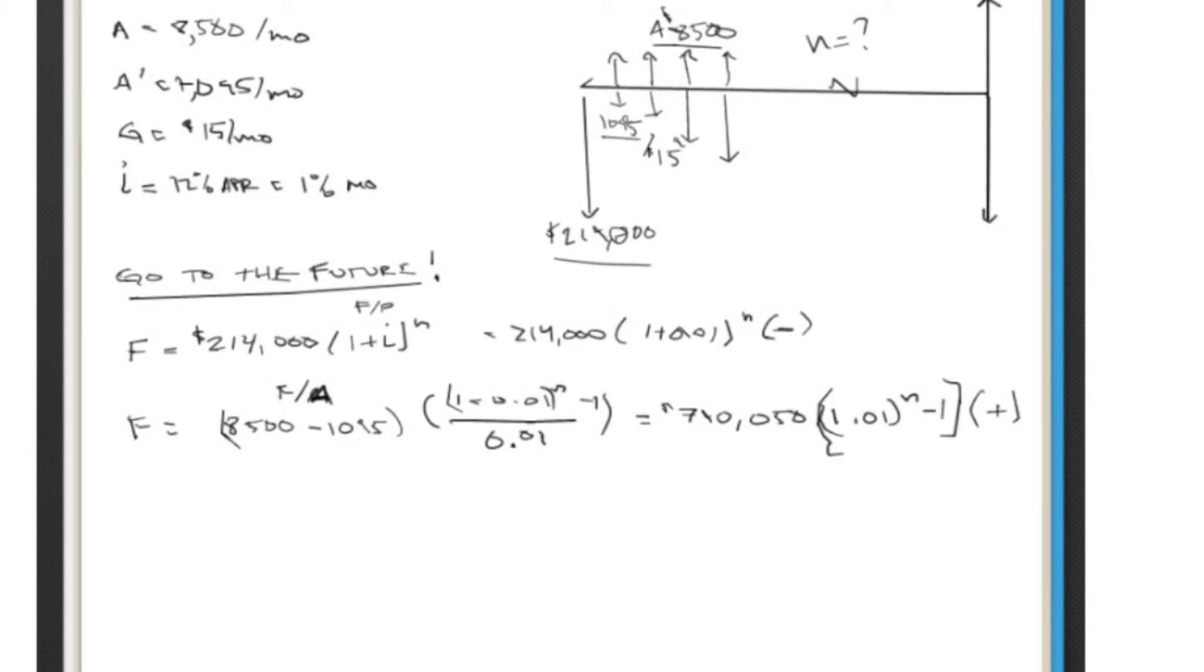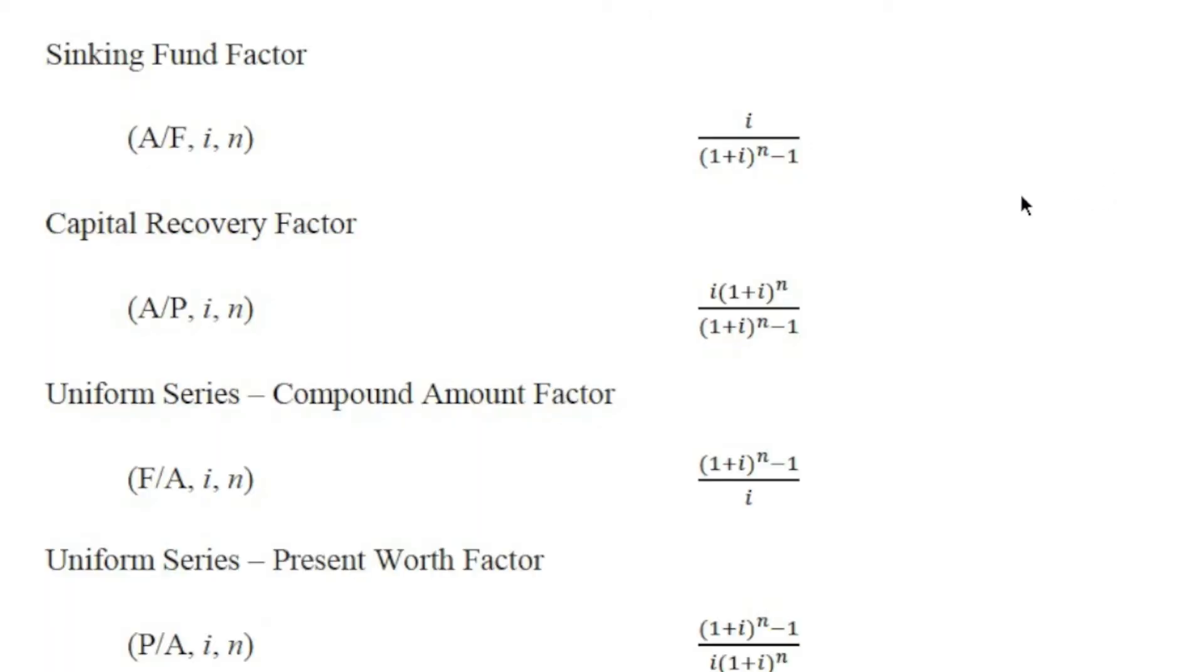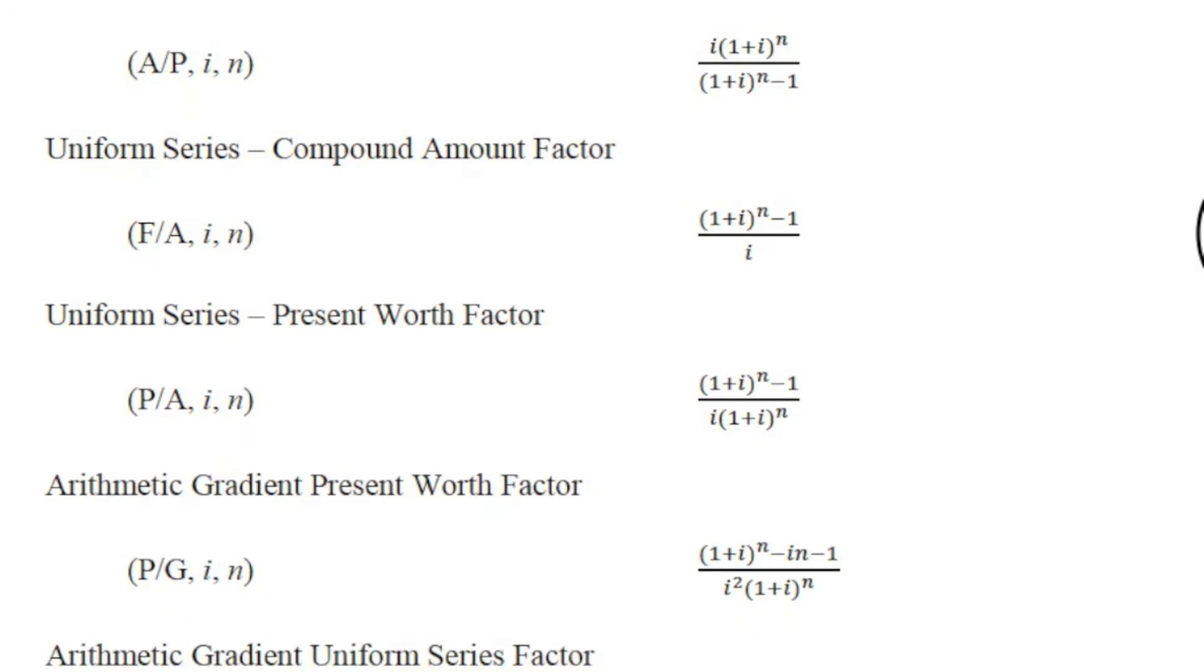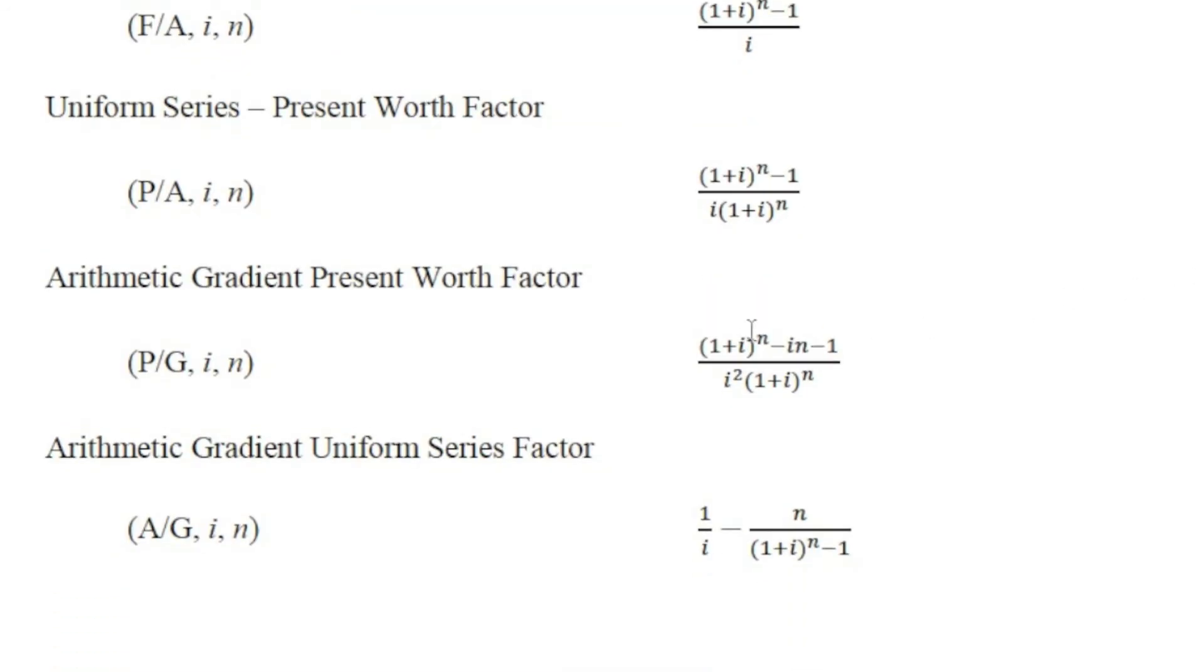Alright, next one. We're going to look at this maintenance cost here, this $15, which is an arithmetic gradient uniform series factor. So we're going to define the F value of this. Basically, we're finding F given G, which if you look on here, F given G doesn't exactly exist. We have a P given G, we have an A given G, we don't have F given G. So what can we do?